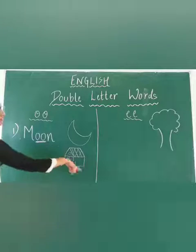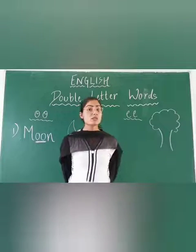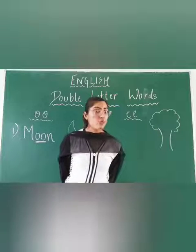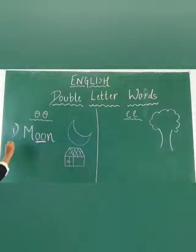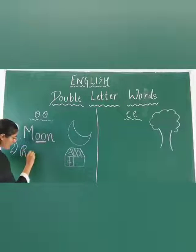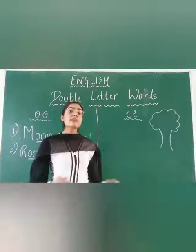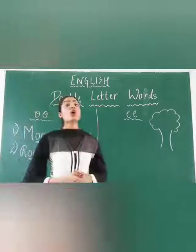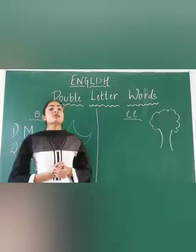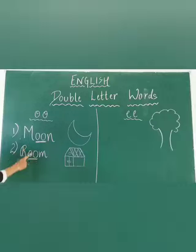Our second word — tell me what is this? This is a house. There are multiple rooms like bathroom, dining room, and bedroom. We have already learned this. So what is the spelling of room? R, double O, M — room. Whenever double O appears, the pronunciation will be room.